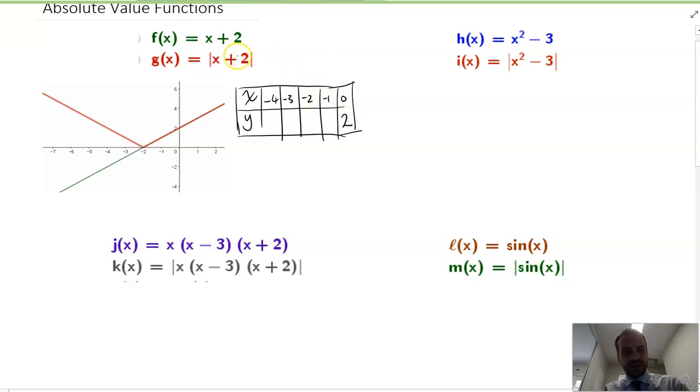Negative 1, negative 1 plus 2 is 1. The absolute value of 1 is 1. Negative 2 plus 2 is 0. The absolute value of 0 is 0. And then this is where it gets interesting. This is where it bounces off here.